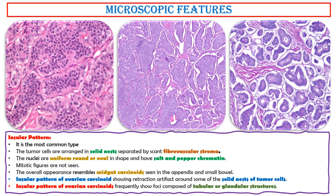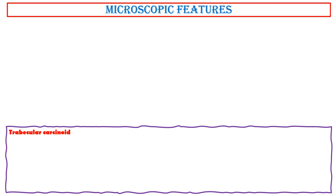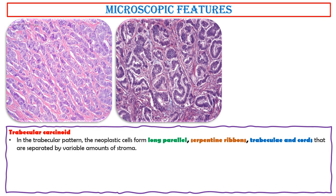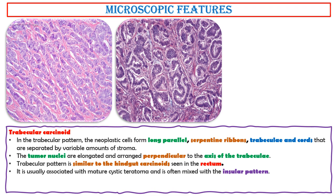The insular pattern of ovarian carcinoids frequently shows foci composed of tubular or glandular structures. In the trabecular pattern, the neoplastic cells form long parallel serpentine ribbons, trabeculae and cords, separated by variable amounts of stroma. The tumor nuclei are elongated and arranged perpendicular to the axis of the trabeculae. The trabecular pattern is similar to hindgut carcinoids seen in the rectum. It is usually associated with mature cystic teratoma and is often mixed with insular pattern.